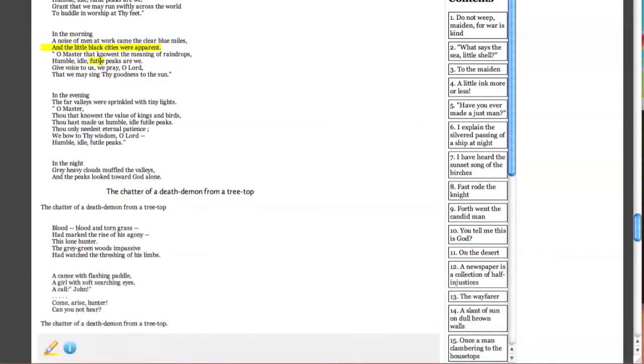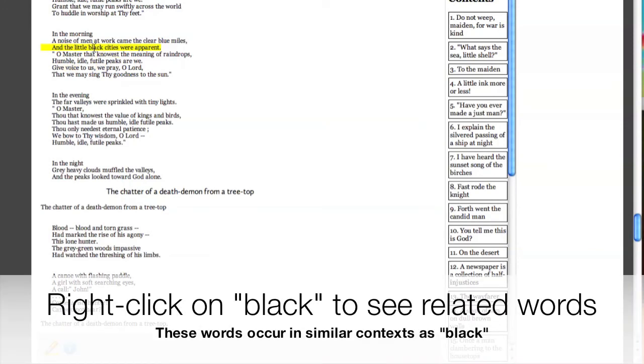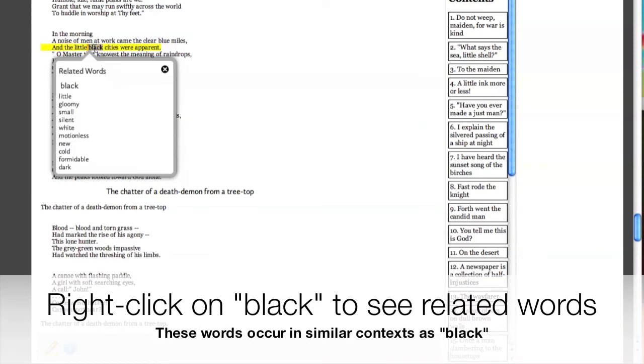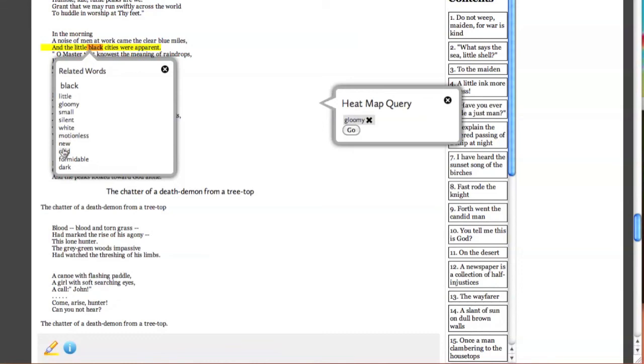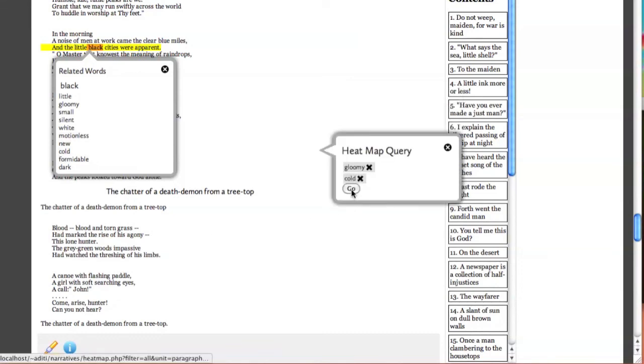While exploring texts in this manner, you may get curious about other words that behave like black. So, right-clicking on a word in the document viewer shows you related words. These are words that have been computationally determined to occur in similar contexts as black to be used in similar ways. In this case, we may be interested in the related words gloomy and cold.